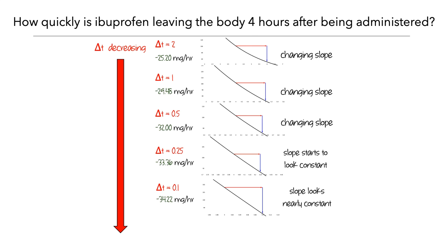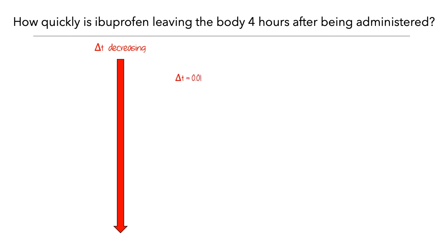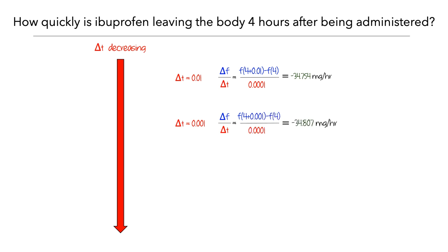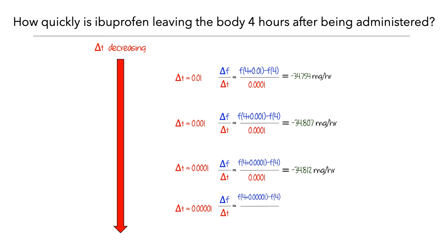What would we see if we continued this process? When we use a delta t of one hundredth of an hour, the average rate at which ibuprofen is leaving the body is –34.754 mg per hour. When we use a delta t of one thousandth of an hour, the average rate is –34.807 mg per hour. When we use a delta t of one ten-thousandth of an hour, the average rate is –34.812 mg per hour. And when we use a delta t of one hundred-thousandth of an hour, the average rate is –34.813 mg per hour. So as we make the time interval smaller, these average rates appear to be getting closer to a particular number — roughly –34.813 mg per hour.